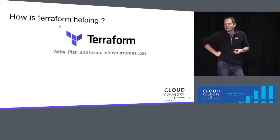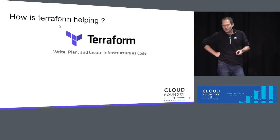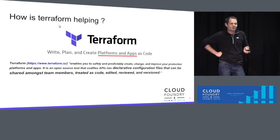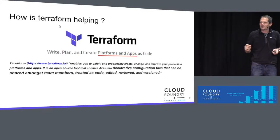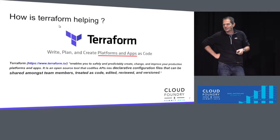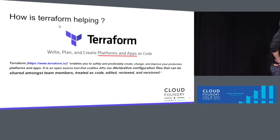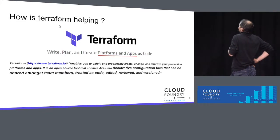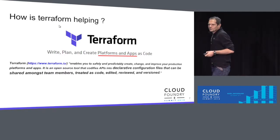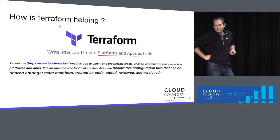Most of us know Terraform as a way to provision infrastructure prerequisites — load balancers, networks, security groups — but there's more than that. Today we're going to show how you can provision platforms and apps using Terraform. We had a bit of fun with the HashiCorp website: we did a search-and-replace, changing 'infrastructure' to 'platform and apps,' to illustrate that most concepts still hold. The core principles of Terraform — for those that don't know — are declarative config files saved into Git and shared among team members. It's really code: infrastructure as code, or in our case today, platform and apps as code.